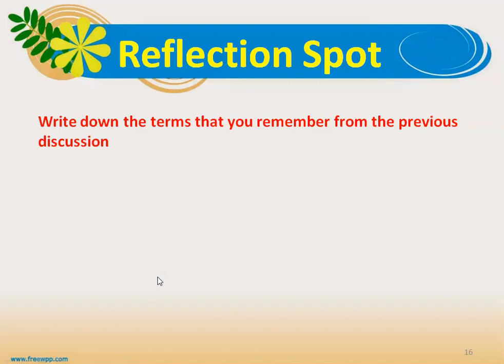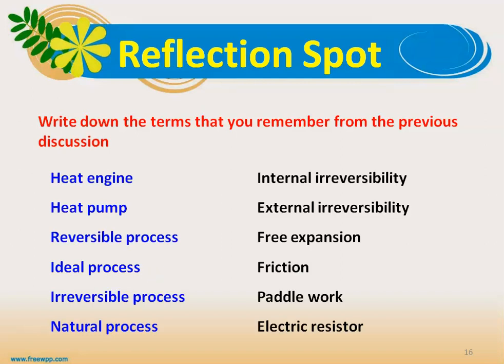We stop here for a reflection spot. Write down the terms you remember from the previous discussion. In the past 25 minutes, the key terms include: heat engine, heat pump, reversible process, ideal process, irreversible process, natural process, internal irreversibility, external irreversibility, free expansion, friction, paddle work, electrical resistor, mechanical irreversibility, chemical irreversibility, and thermal irreversibility.